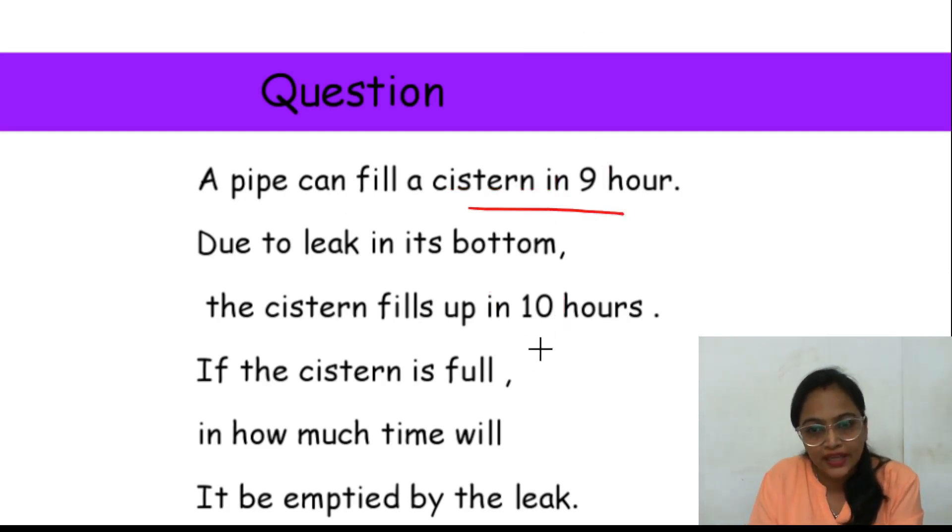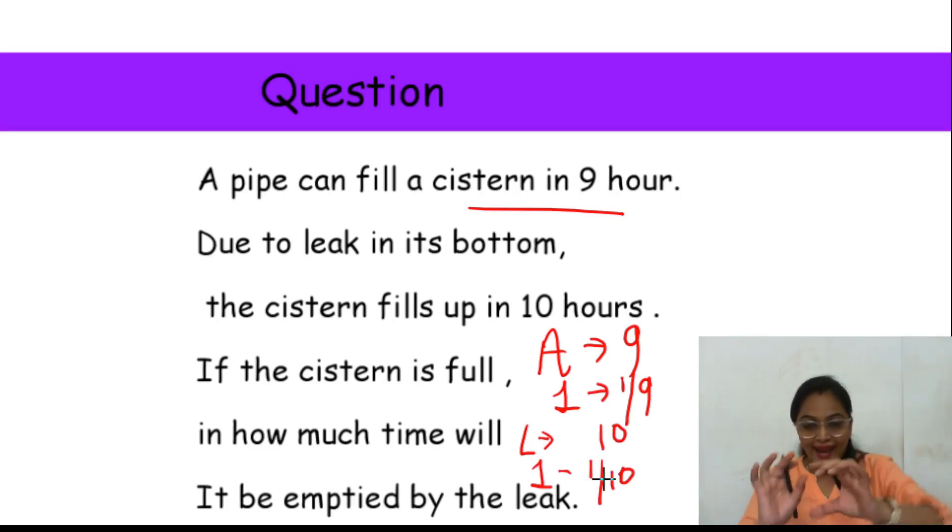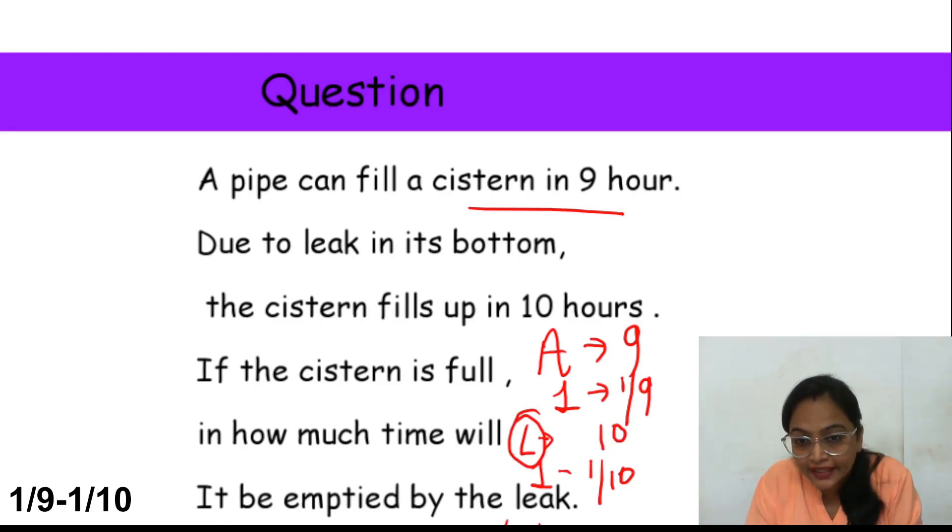Ab dekho, isme pipe A, agar main pipe A ki baat karun, toh nine hours mein pura bharta hai. Toh ek hour mein bharega one by nine. Ab leak ke karan kya ho raha hai? Agar main leak ki baat karun, L leak dete hain. Leak ko aap samajh sakte hain outlet pipe. Toh leak kaam kitna kar raha hai? One by nine minus one by ten. Itna time actual lag raha tha, aur one by ten leak ke karan lag raha hai pura fill ho raha hai. Toh leak kitna kar raha hai? Wahi jo outlet pipe hai, wahi kitna kar raha hai? One by nine minus one by ten. Toh iska agar aap LCM lelo...